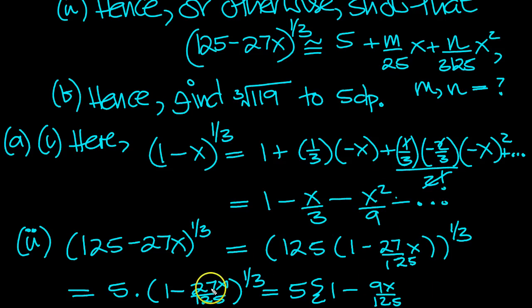And then the next term, minus x squared, this squared. So it's minus, that correspondence is fine. So it's 27x over 125, this squared over 9. So we'll put it like that, minus dot, dot, dot, close bracket.